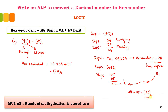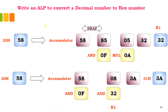Very simple — all you need to remember is the formula to convert to hex equivalent. In the program, I have considered input stored at memory location 30H, a temporary register R1, and the final result to be stored in memory location 31H.